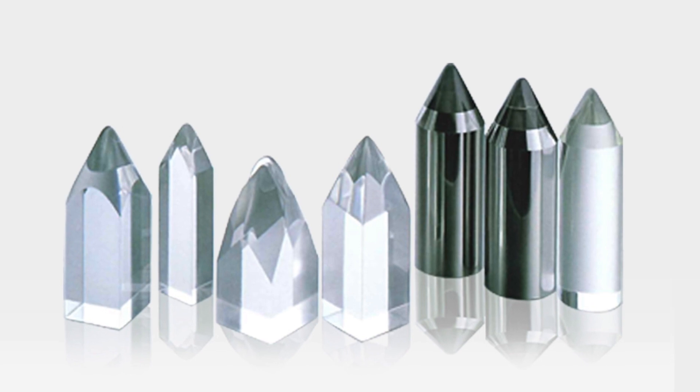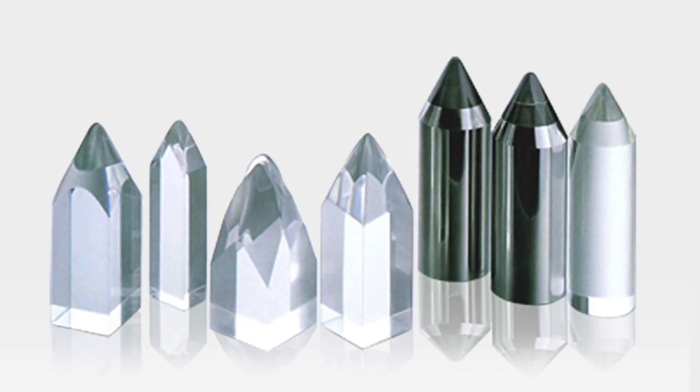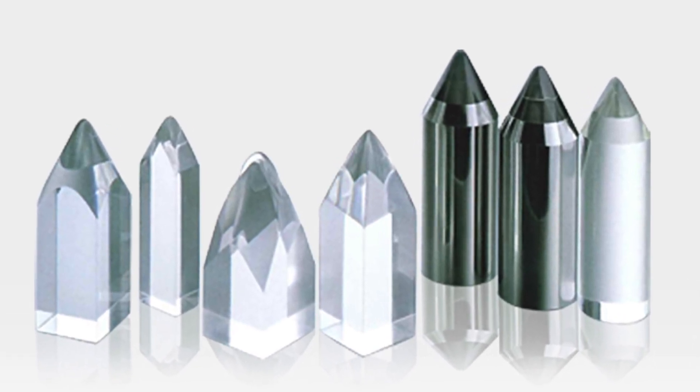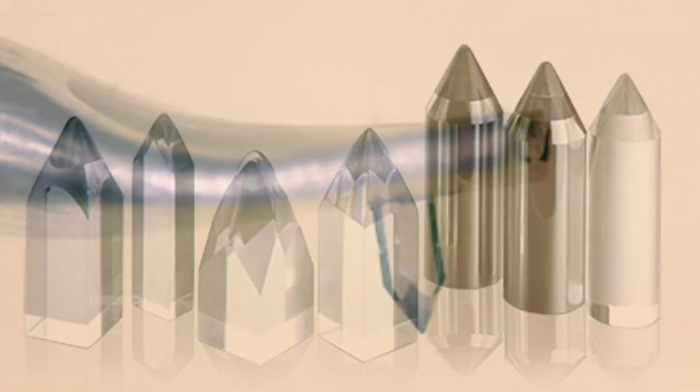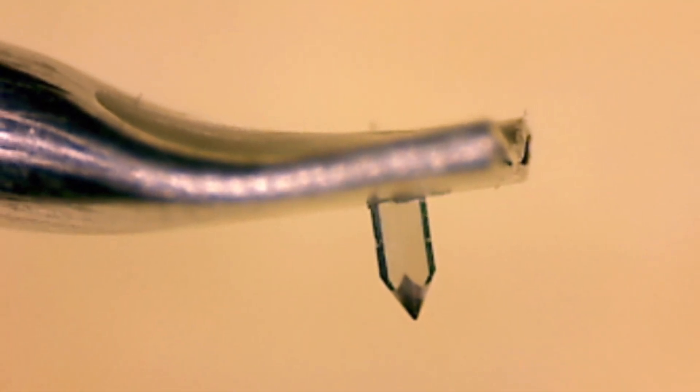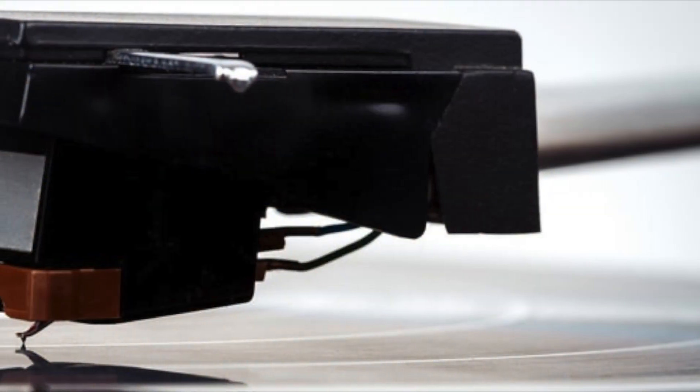In a previous episode, I looked at the different types of turntable styli. There's that word again, styli. Sounds weird saying it. If you recall, your stylus sits at the end of a cantilever. The other end of the cantilever disappears into a little magic box called the cartridge.